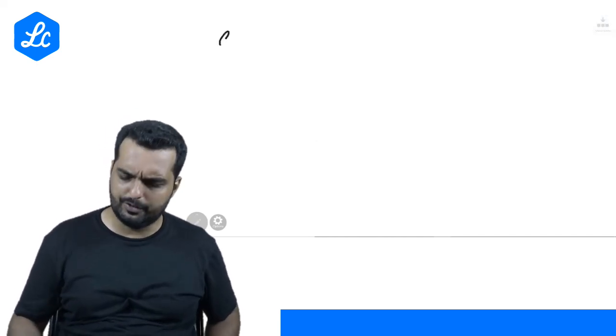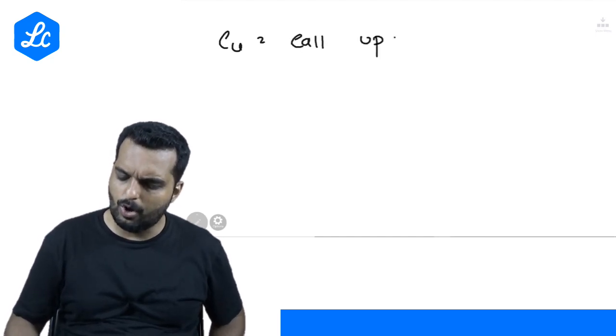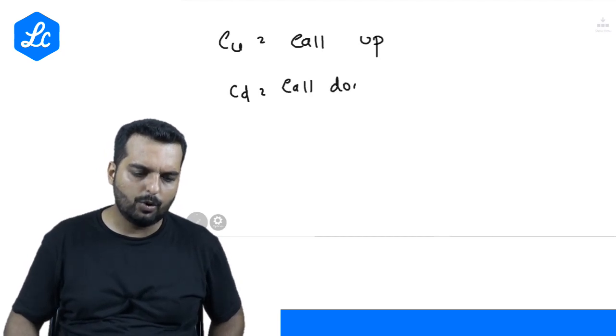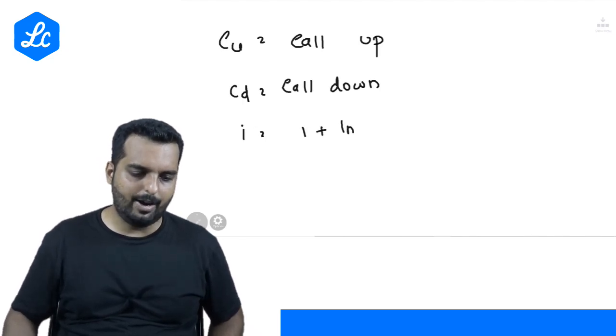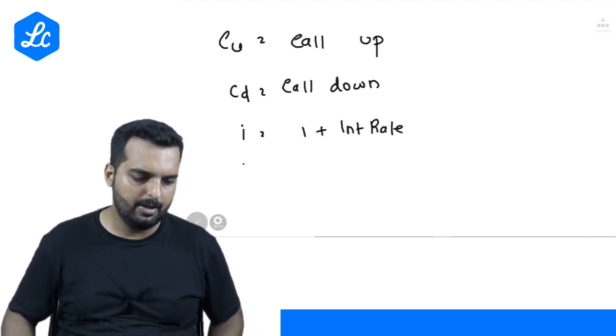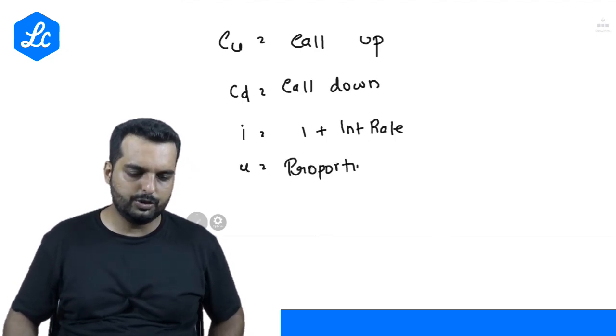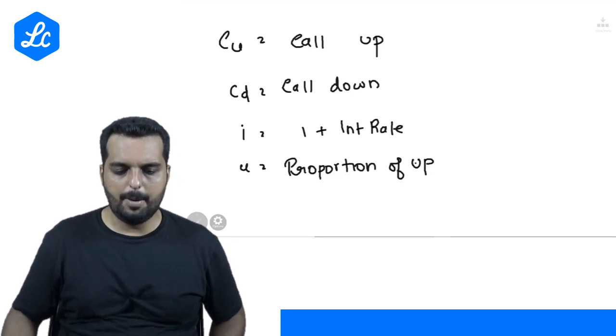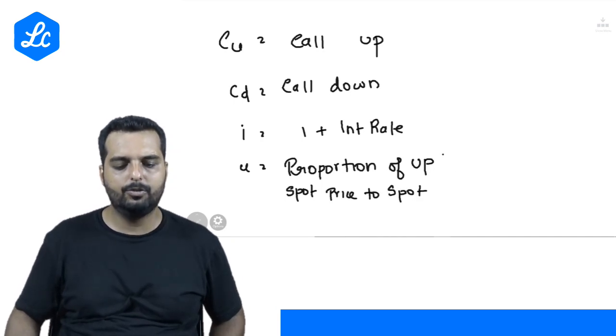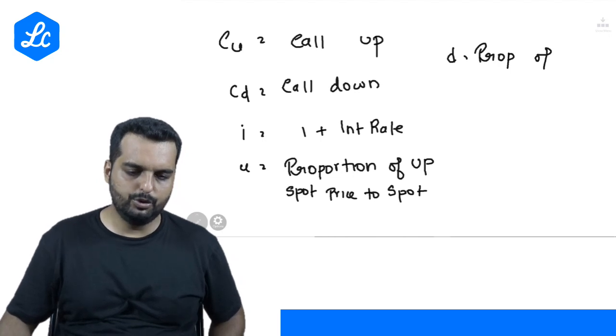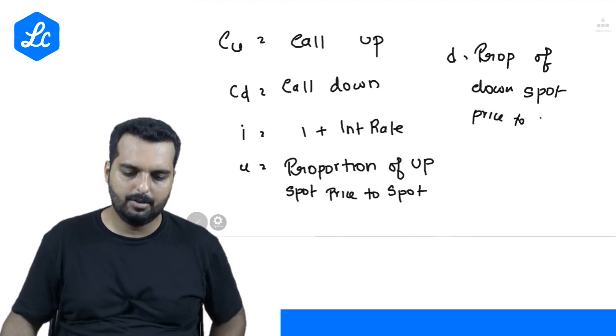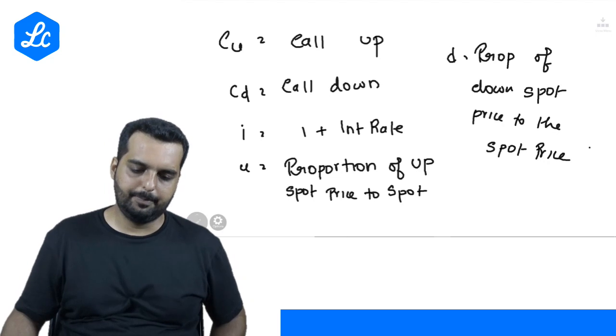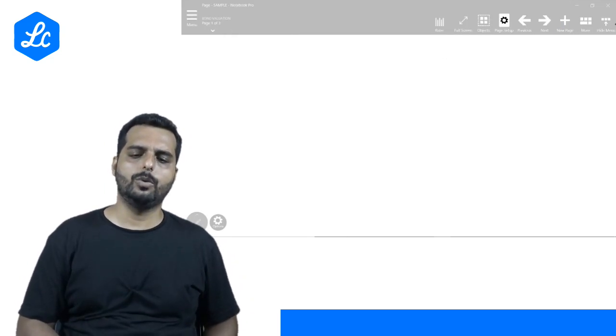First let us understand the meaning of the words. Cu means call up. Cd means call down. What it is you will understand very soon. Then I had i, which means 1 plus the interest rate. We had u which is the proportion of up spot price to the spot price. D means the proportion of down spot price to the spot price. Let us first put the numbers and then we will see how we are getting the answer.